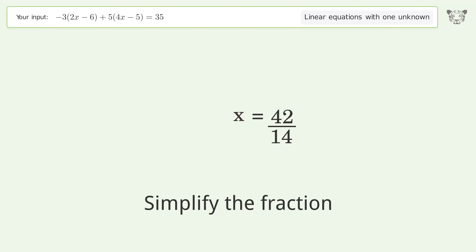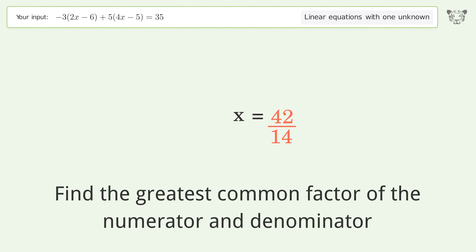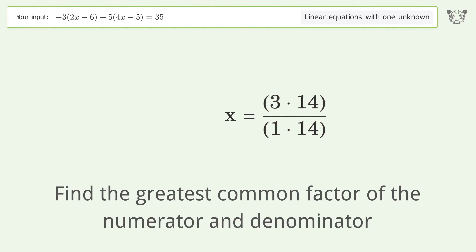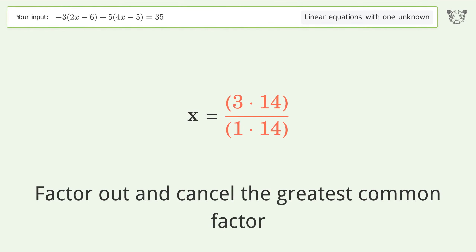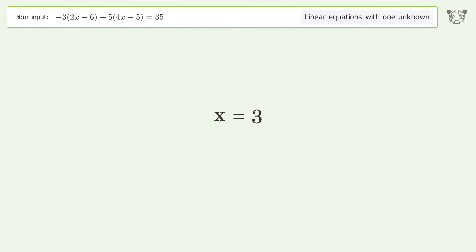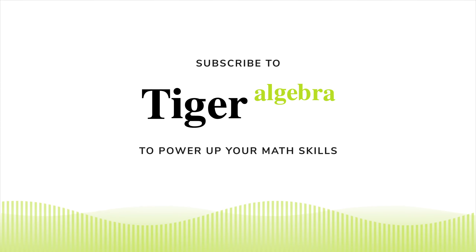Isolate the x: divide both sides by 14 and simplify the fraction. Find the greatest common factor of the numerator and denominator, then factor out and cancel the greatest common factor.